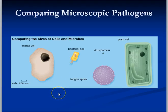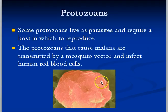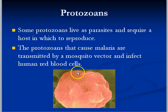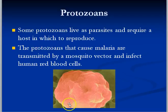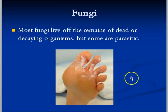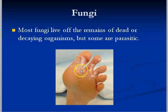Here are some sizes of different types of cells: typical animal and plant cells are relatively large, bacterial cells are smaller than animal cells, viruses are really tiny, and fungus spores cause things like athlete's foot. You're not responsible for protozoans and fungi on the test, but know that they are pathogens that cause disease. There's an image of a red blood cell infected with the malaria protozoan — it's deformed and close to bursting. Athlete's foot is caused by a fungus that feeds off dead skin cells between the toes, causing blistering and open sores.